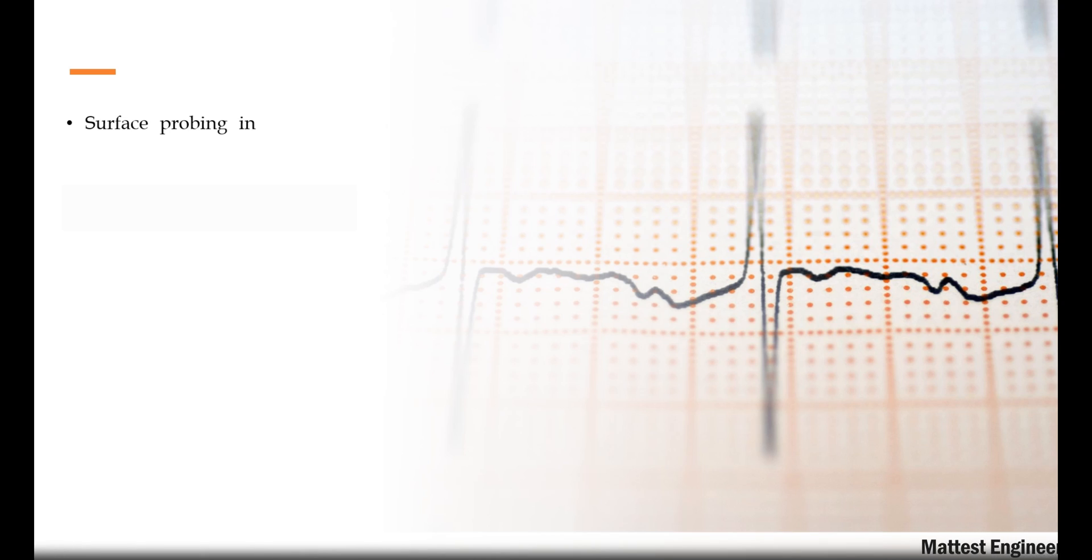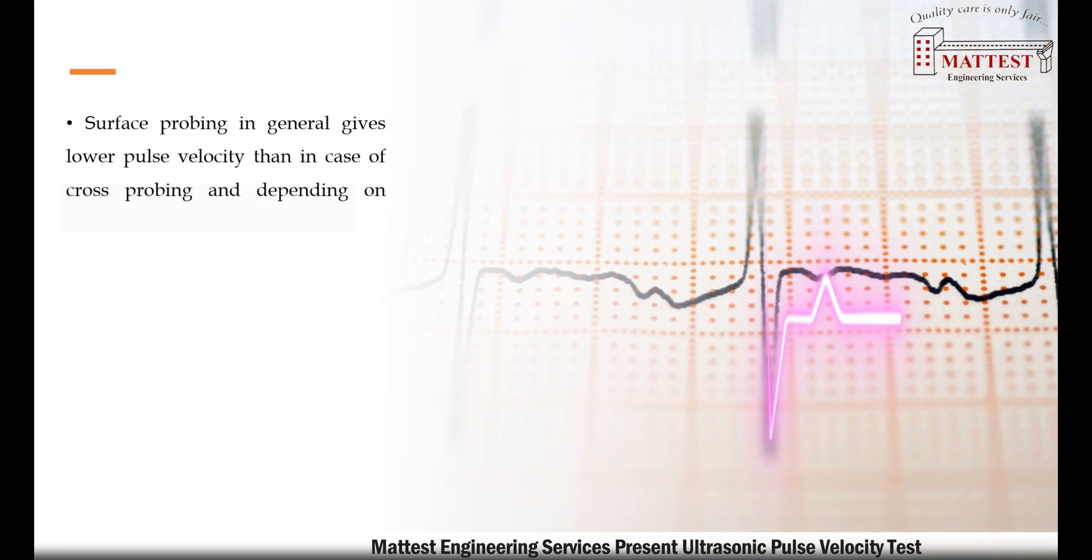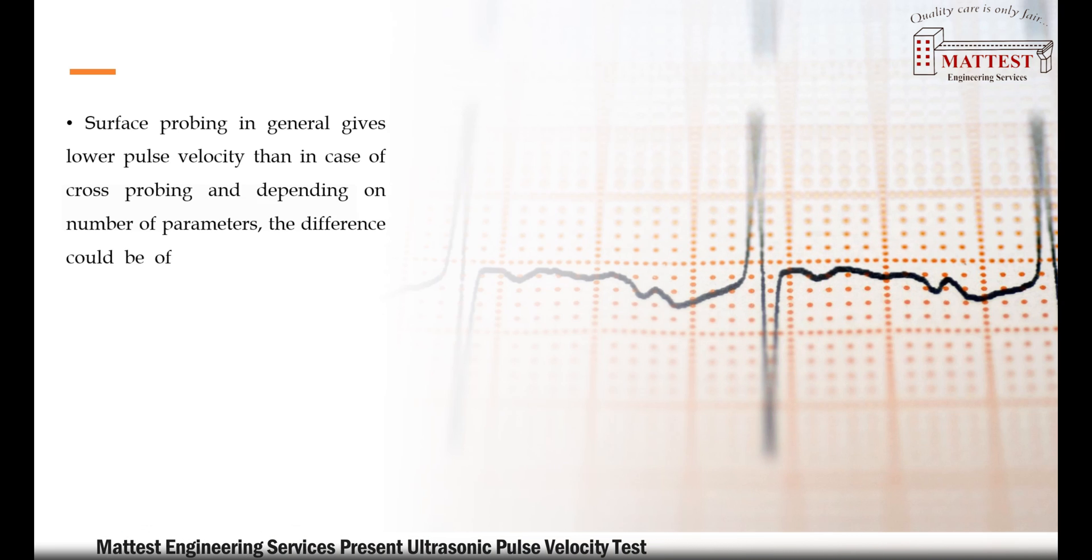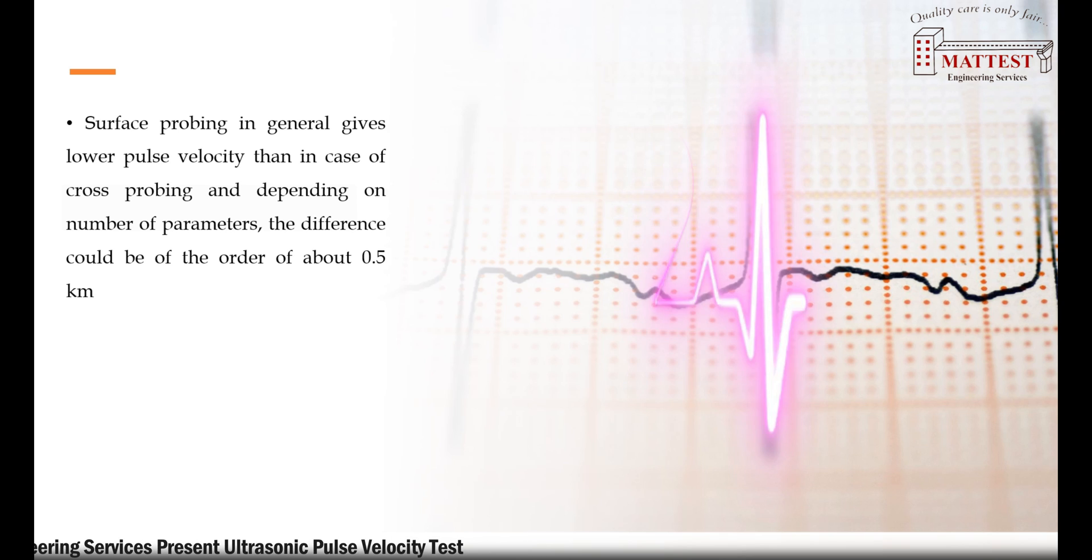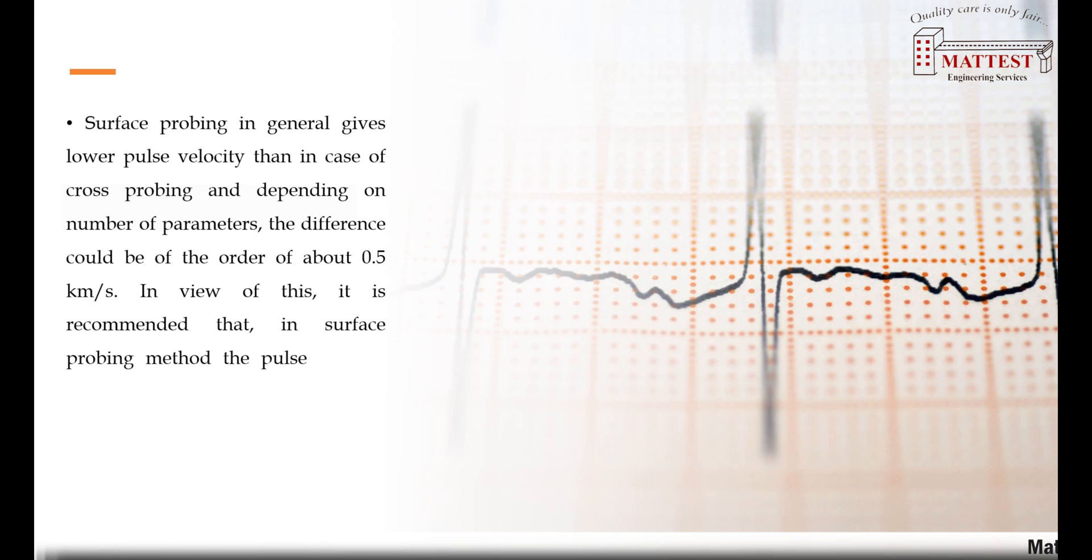Surface probing in general gives lower pulse velocity than in case of cross probing, and depending on number of parameters, the difference could be of the order of about 0.5 kilometers per second. In view of this, it is recommended that in surface probing method, the pulse velocity may be increased by 0.5 kilometers per second for values greater than 3.0 kilometers per second.